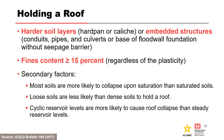For holding a roof, two primary factors are the presence of a continuous harder soil layer or embedded structure, and the fines content being greater than or equal to 15%, regardless of the plasticity of the fines. Non-plastic silts, sands, and gravels will generally not hold a roof since the roof collapses upon saturation. Partially saturated and high fines content non-plastic soils may hold a roof near the phreatic surface, but the roof is sustained by pore pressure suction and may collapse upon saturation. As secondary factors, moist soils are more likely to collapse upon saturation than saturated soils, loose soils are less likely to hold a roof than dense soils, and cyclic reservoir levels are more likely to cause roof collapse than steady reservoir levels.